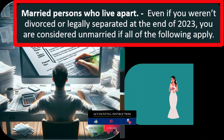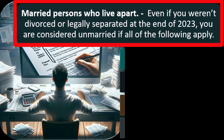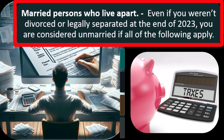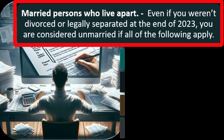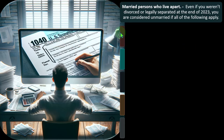Regarding married persons who live apart: even if you weren't divorced or legally separated at the end of 2023, you are considered unmarried if all of the following apply. This is a complex situation because federal income taxes designate married versus single, yet marriage is typically a state issue — meaning laws about marriage vary state to state, which can have a federal impact on the federal tax return.